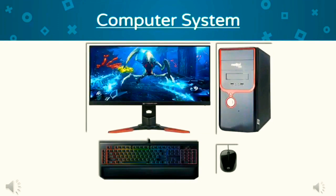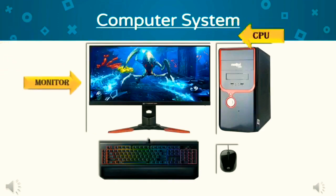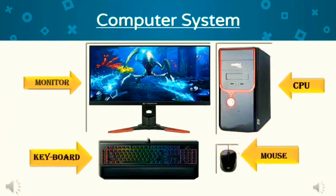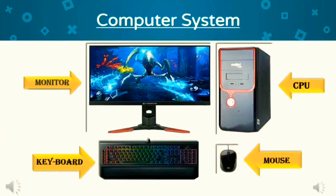You can see that the computer has four main parts: monitor, CPU, keyboard and mouse. Let us read about all these parts one by one.